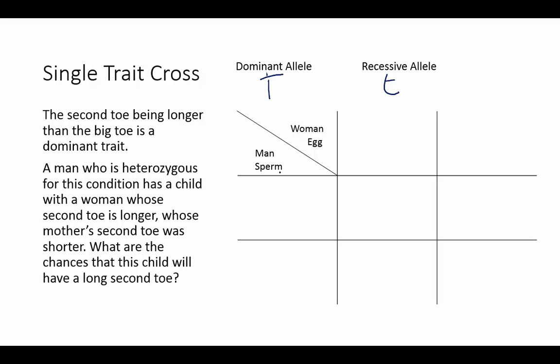So let's look at the parents. Here we have a man who is heterozygous. We know that this man, therefore, has to have one dominant allele and one recessive allele, because heterozygous tells us that his two alleles are different. So his second toe will be longer than his big toe because he is heterozygous.